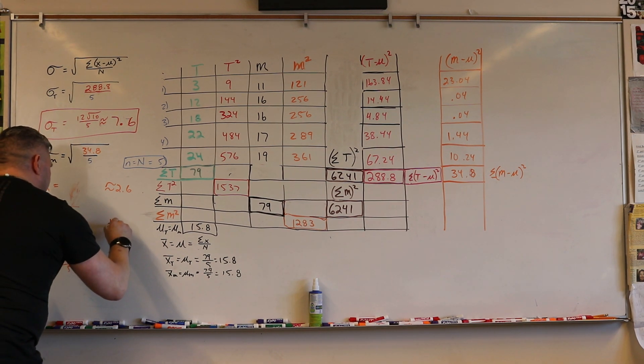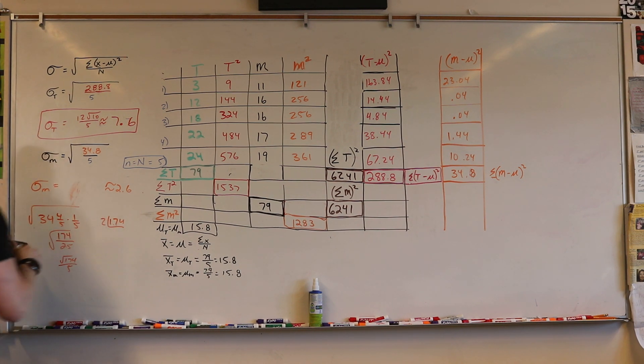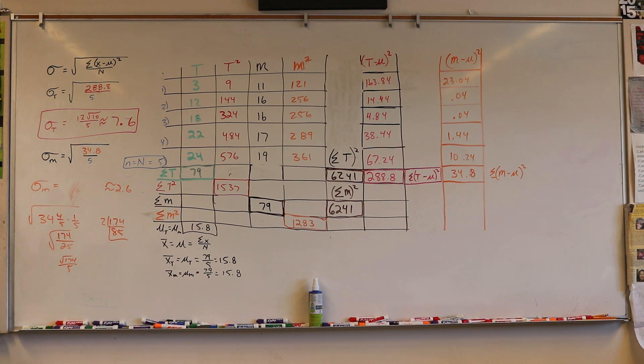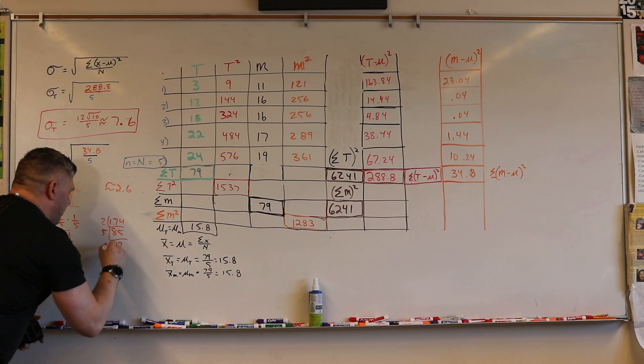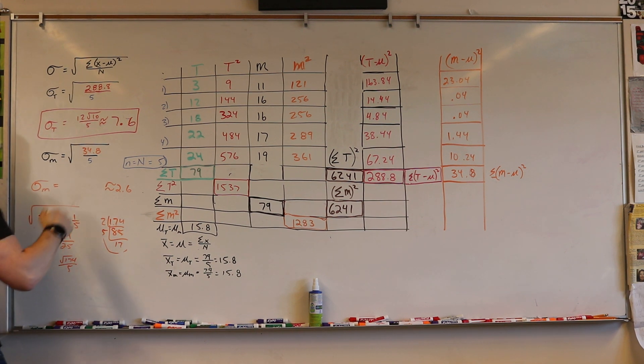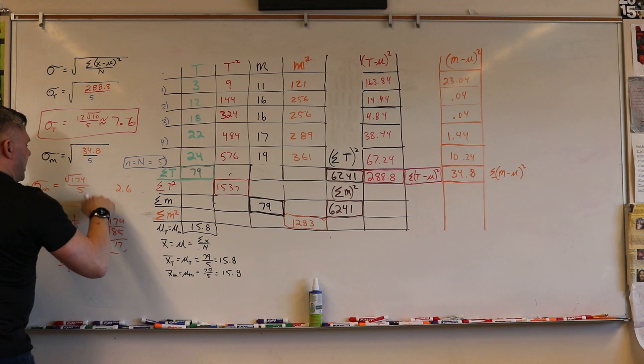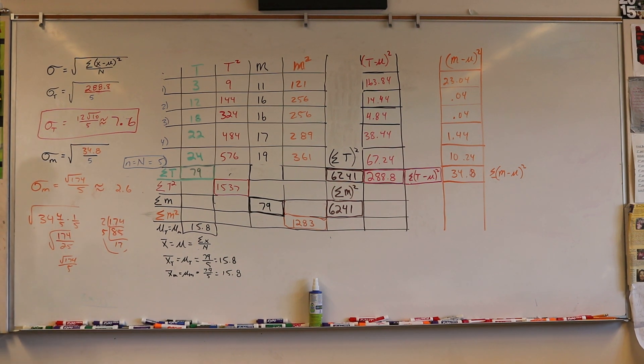And then I break down 174, so 174 divided by 2 is 85. Then 85 divided by 5 equals 17. So these are all primes, so basically that's my lowest that I can go. So I got the square root of 174 over 5, or the approximation is 2.6.